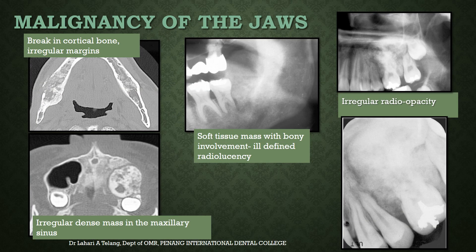On a CT scan you could see a break in cortical margins with irregular radiolucency, or a soft tissue mass with bone involvement and ill-defined radiolucency around the molar. You could also see irregular radio-opacities that are ill-defined and very dense in appearance, and masses completely involving the maxillary sinus with non-uniform density — all suspicious of malignancies of the jaws.